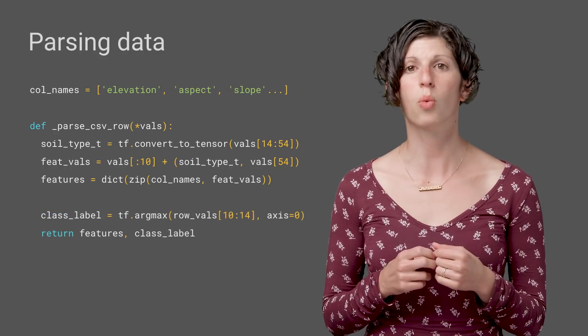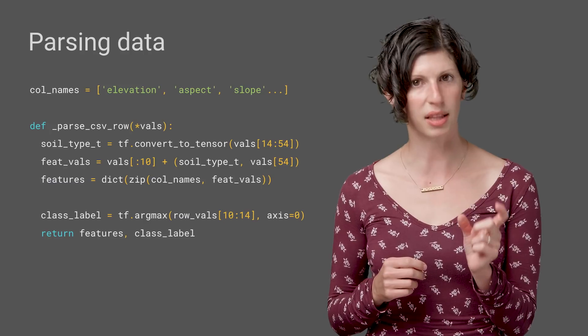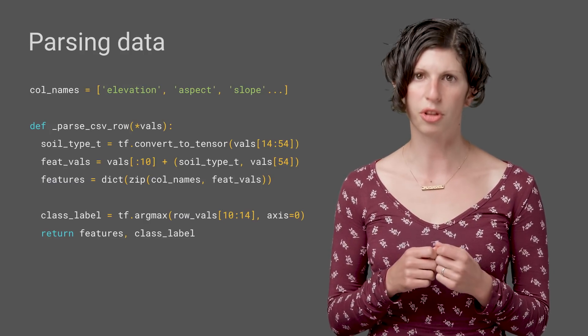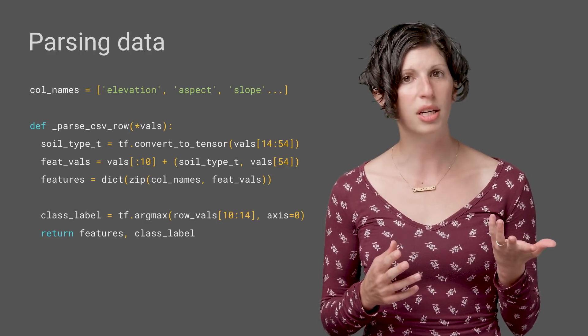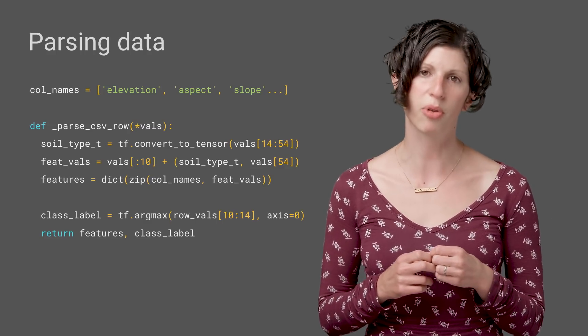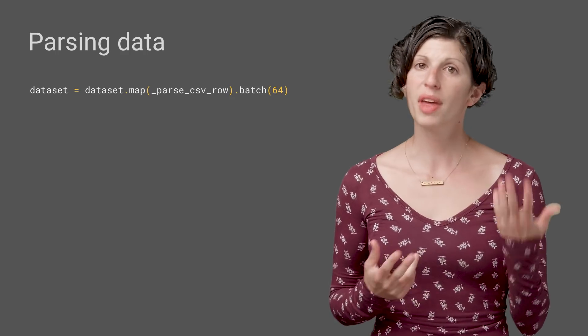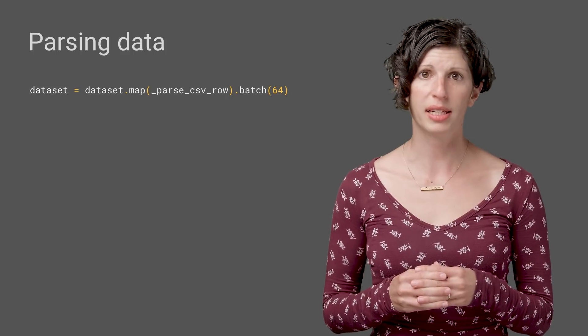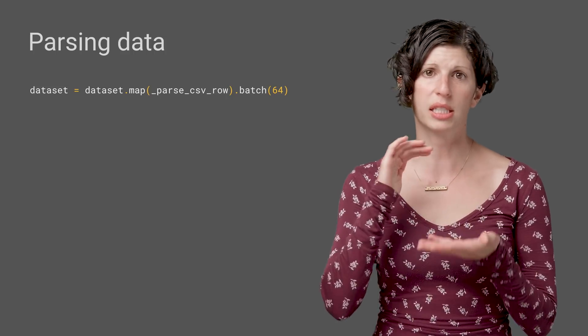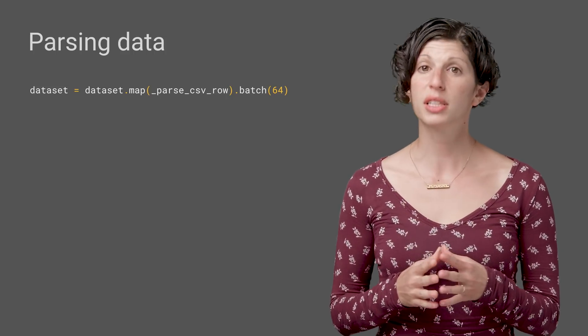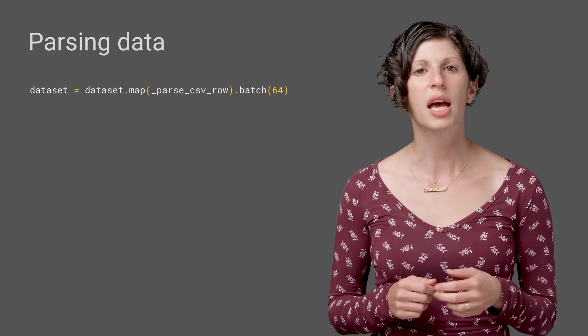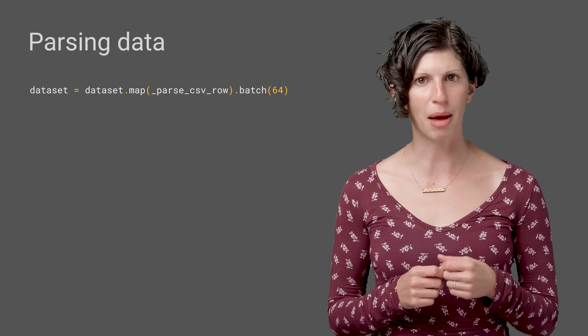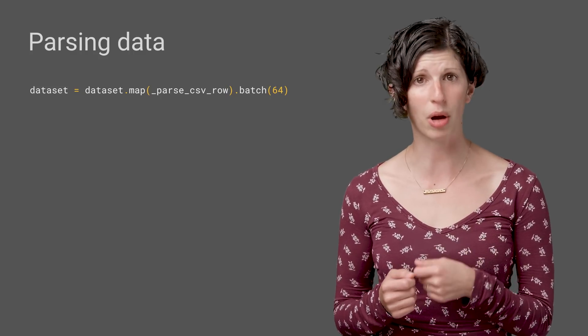Finally, we convert our one-hot encoded wilderness area class into a class label that is in the range 0 to 3. We could leave them one-hot encoded as well, and for some model architectures or loss calculations, that might be preferable. And that gives us features and a label for each row. We then map this function to our data row-wise, and then we batch the rows into sets of 64 examples. Using TensorFlow datasets here allows us to take advantage of many built-in performance optimizations that datasets provide for this type of mapping and batching to help remove I.O. bottlenecks.